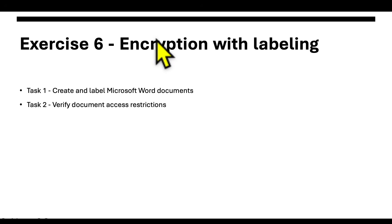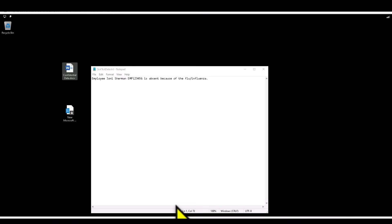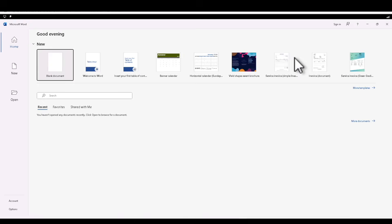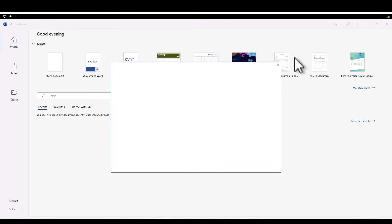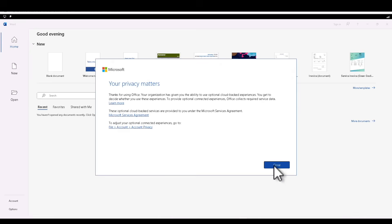In the next exercise, we are going to learn about encryption with labeling. We're going to create and label Microsoft Word documents — or Excel if Word doesn't work — and verify the document access restrictions. Let's open Word. Since I'm using it for the first time, it's going to ask me to sign in and accept the license agreement.